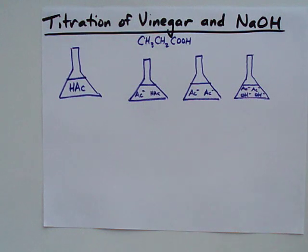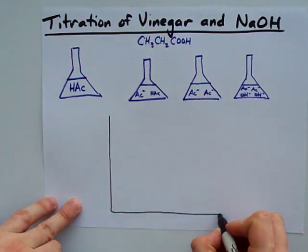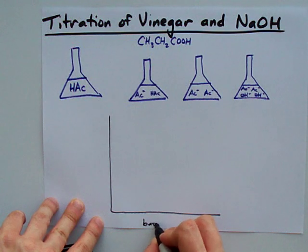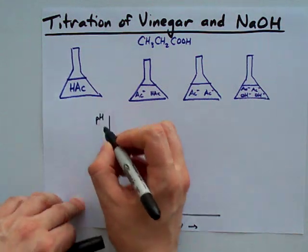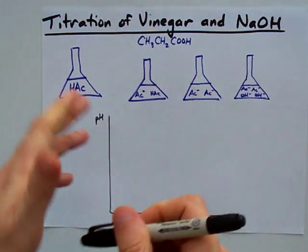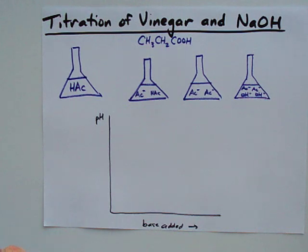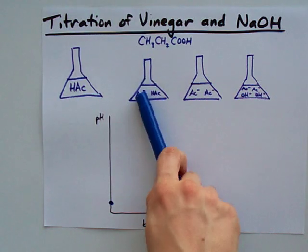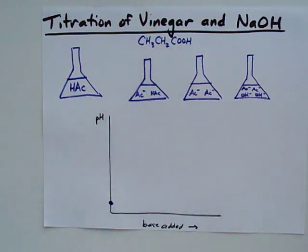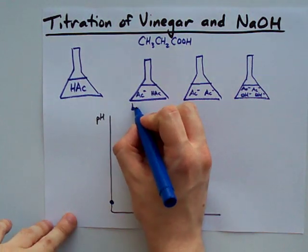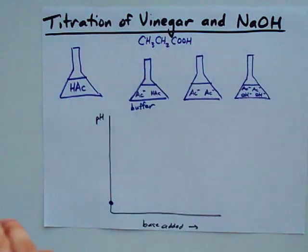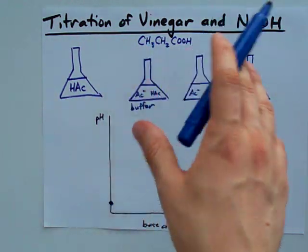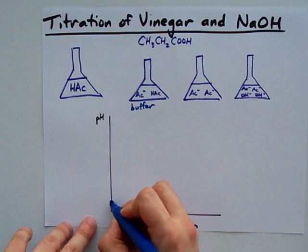I want to show you how the titration curve appears. On the X-axis we have the base added, probably in milliliters, and on the Y-axis we have the pH. At the beginning of the titration, we start with an acidic pH. Once we have a balance of acid and its own conjugate base in solution, this is called a buffer. This doesn't occur if it was strong base and strong acid — it only occurs when one of them is weak.